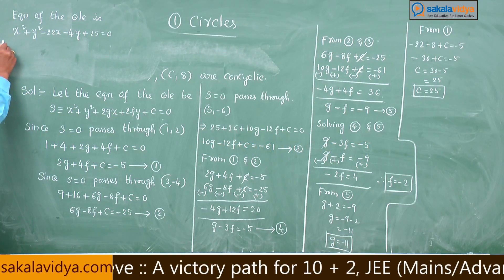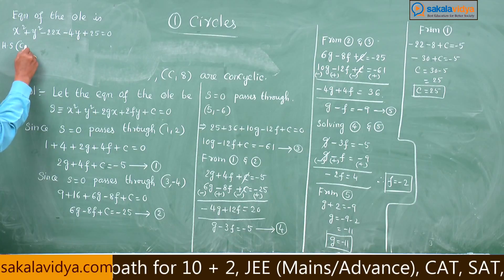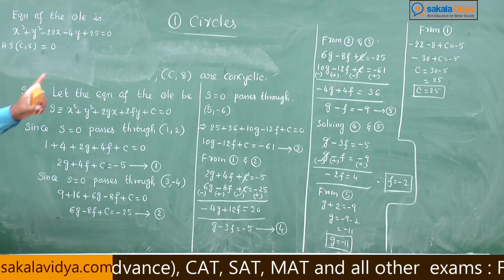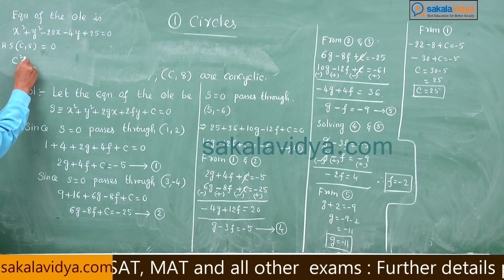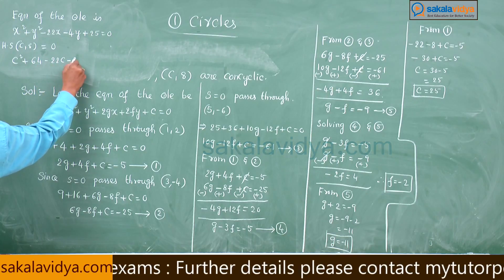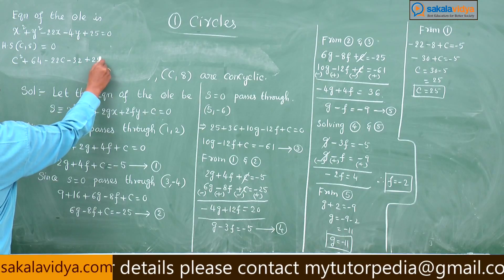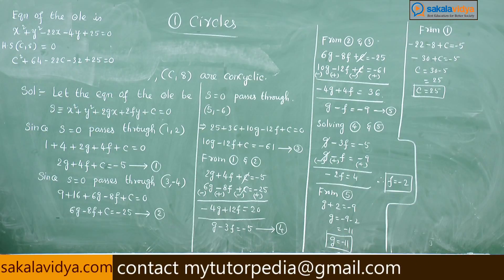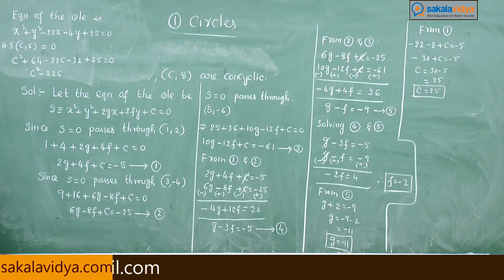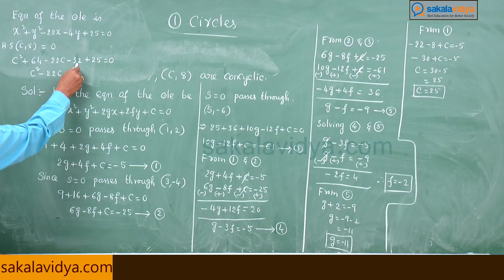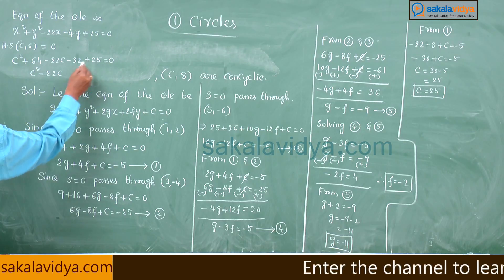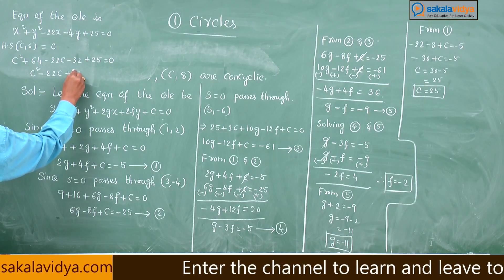Now substituting the fourth point (C, 8) into the circle equation: C² + 64 − 22C − 32 + 25 = 0, which simplifies to C² − 22C + 57 = 0.